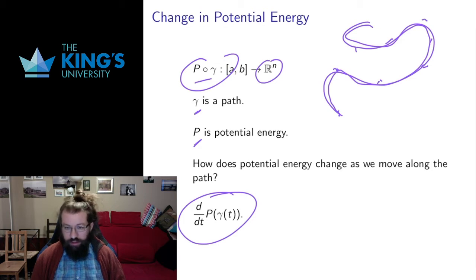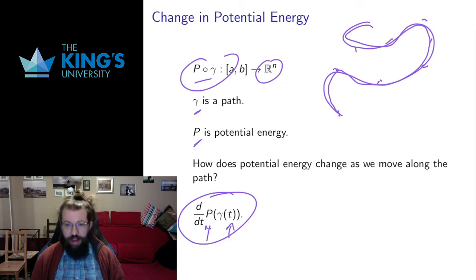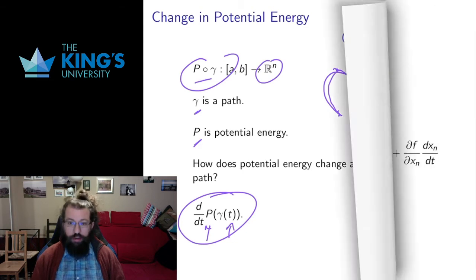It is still a single variable thing. Potential energy depends on t and outputs a scalar, but it's happening in a multi-dimensional space because the path goes through all of Rn.